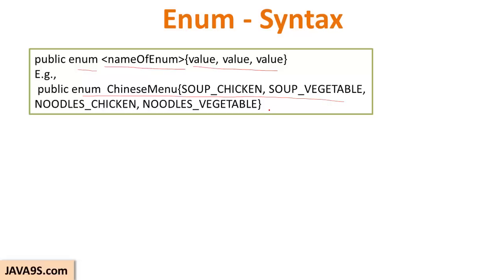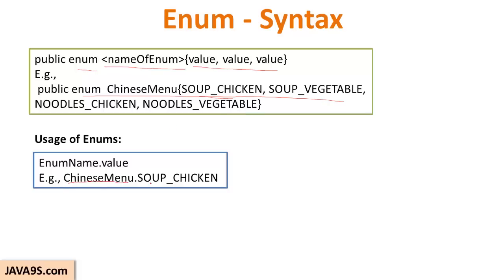This is a simple way of using an enum, but enum can be more powerful if you would like to do more things. We will see how enum can be useful in real-time projects. To get the constants from enum, you use ChineseMenu.SOUP_CHICKEN — just like calling static fields. You should understand that these constants are actually static and final, which is why we are able to call the values or constants with the enum name.